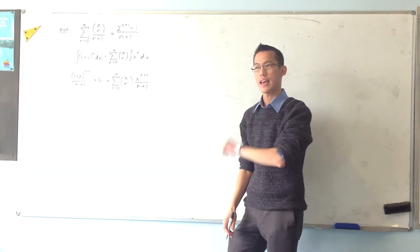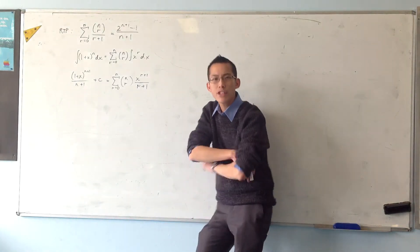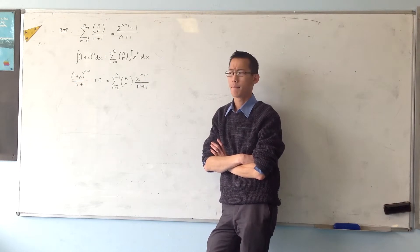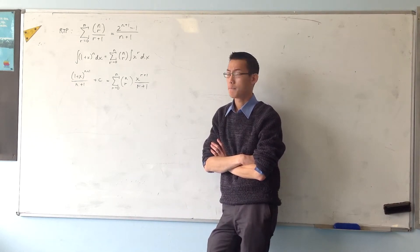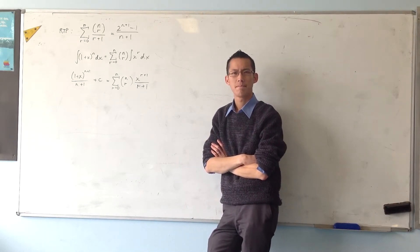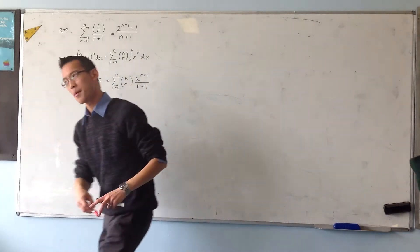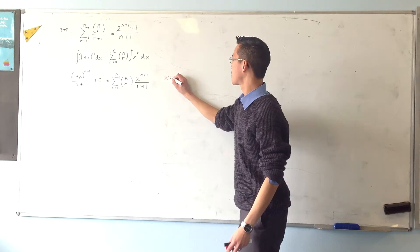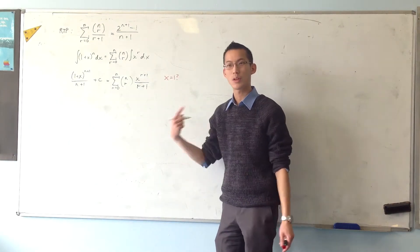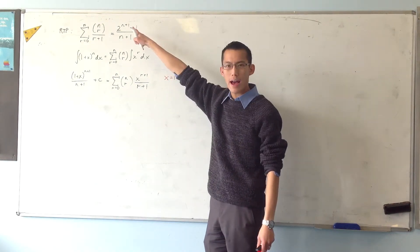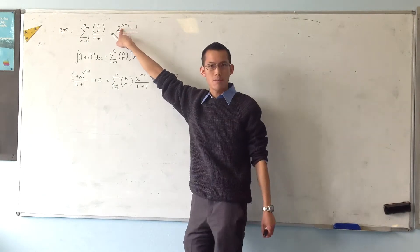And we chose x equals 1, right? Why did we choose x equals 1? Do you remember? If I remember right, we chose x equals 1 because we saw that in what we're required to prove there's a 2 up here, right? See that 2?